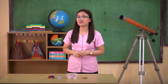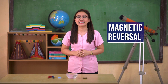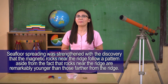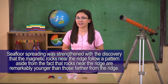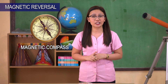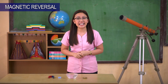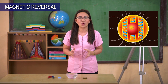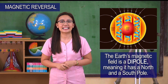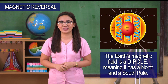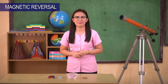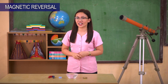Another evidence that supports seafloor spreading is magnetic reversal, or magnetic evidence in rocks. Seafloor spreading was strengthened by the discovery that magnetic rocks near the ridge follow a pattern — rocks near the ridge are remarkably younger than those farther from it. A magnetic compass tells us directions on Earth and proves that the Earth has a magnetic field. Its magnetic field is generated in the very hot molten outer core and has existed since the birth of our planet. The Earth's magnetic field is a dipole, meaning it has a north and a south pole.